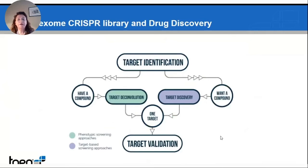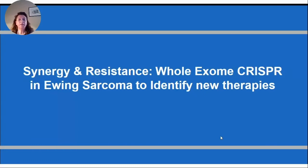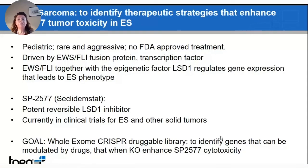Another group of strategies for target identification is target convolution — a strategy in which identification of new targets depends on the effect of a drug. We used this strategy to identify synergy and resistance toward a treatment already used for a cancer. This is the strategy we used to identify new therapy in Ewing sarcoma. Ewing sarcoma is another pediatric rare and aggressive tumor for which unfortunately there is no clear standard treatment. This tumor is driven by the EWS/FLI fusion protein, which acts as a transcription factor that, together with the epigenetic factor LSD1 — lysine-specific demethylase 1 — regulates gene expression leading to the Ewing sarcoma phenotype. In our lab, we developed a very potent LSD1 inhibitor, SP2577, now licensed to Salarius Pharmaceuticals and currently in clinical trial in Ewing sarcoma as well as other solid tumors.